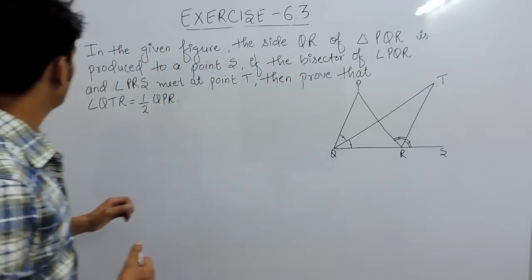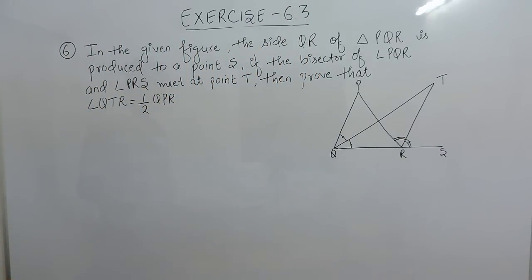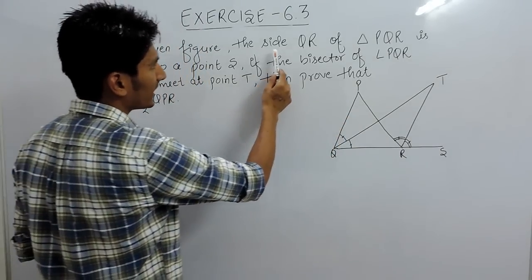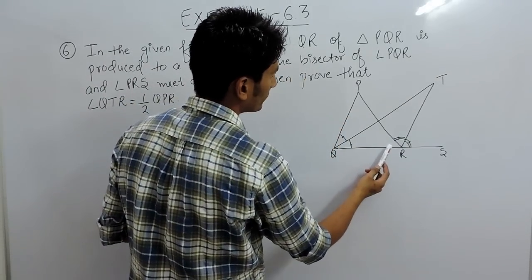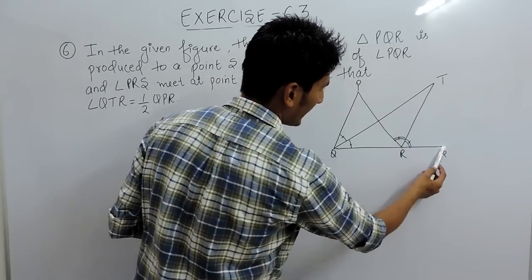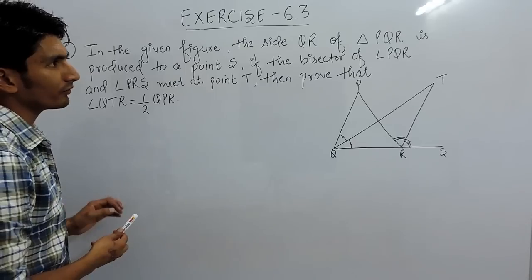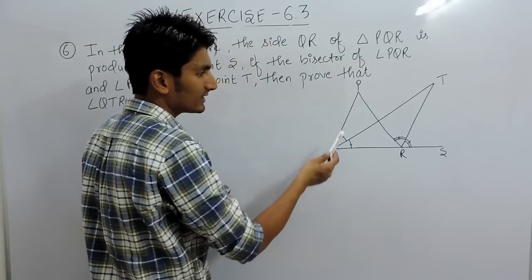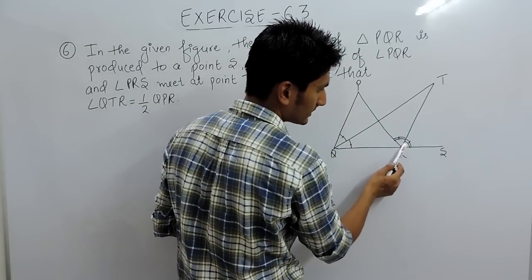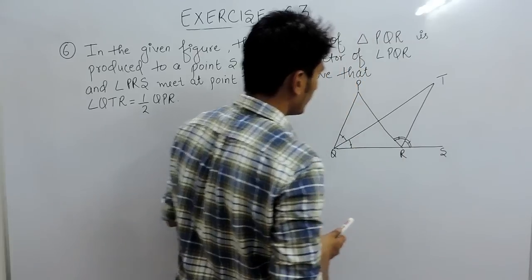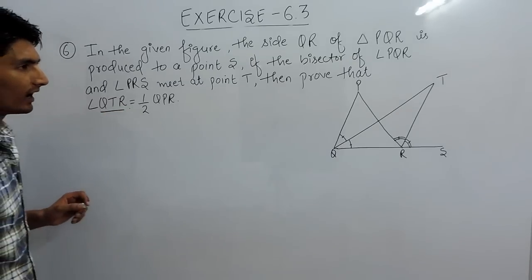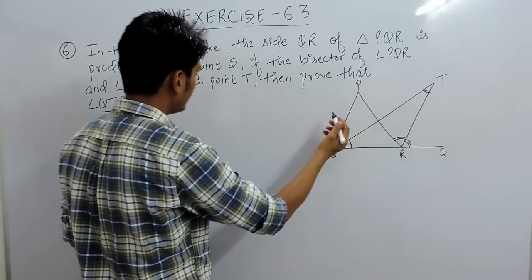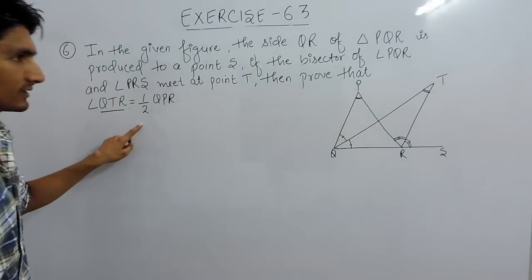Hello everyone. In this video we are going to solve question number 6 of exercise 6.3. In this question, you are given a triangle PQR where side QR is produced till S. The bisector of angle PQR and the bisector of angle QRS meet at point T. You have to prove that angle QPR is half of angle QTR.